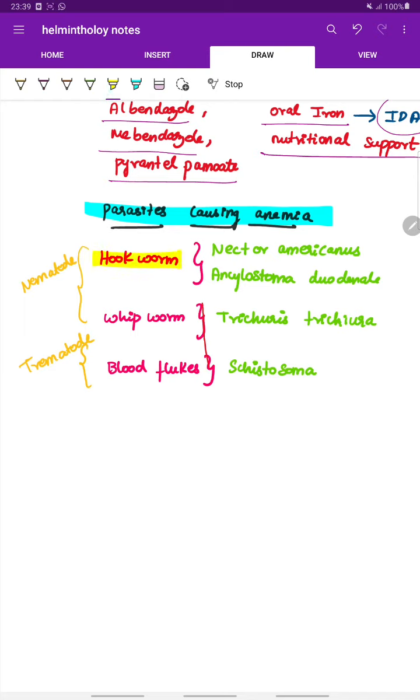So let's see a few parasites causing anemia. Hookworm, that is the Necator americanus and Ankylostoma duodenale causes anemia, and also the whipworm which is Trichuris trichiura. These two are nematodes causing iron deficiency anemia. Next is the blood fluke, schistosoma, which is a trematode, also causes anemia. These are the four important parasites causing anemia. This is all about hookworm. Thank you.